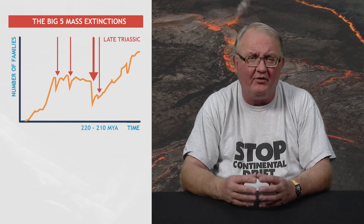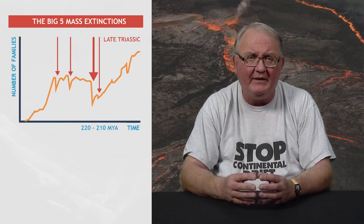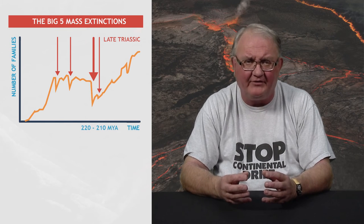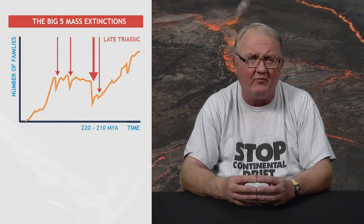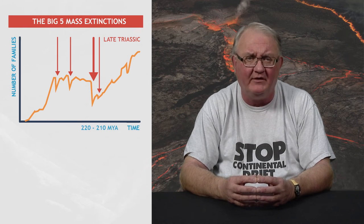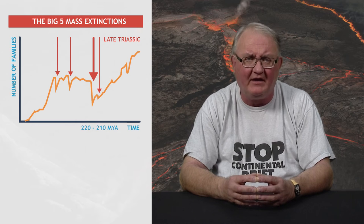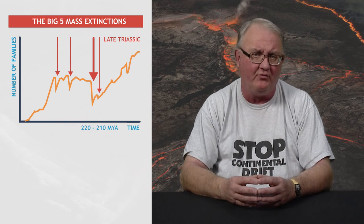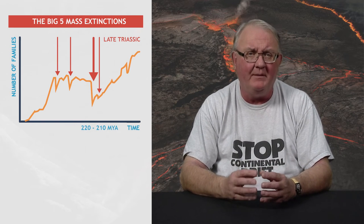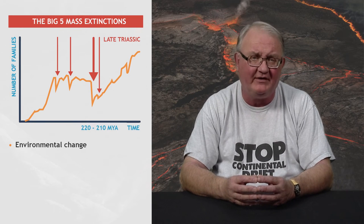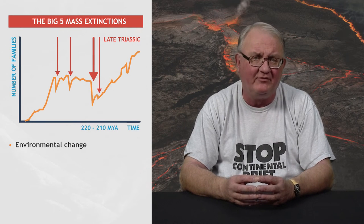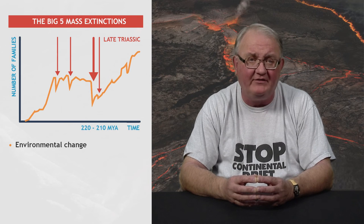The continents, although beginning to separate, were still in close association and red beds are widespread. A wide variety of marine invertebrates may have suffered extinction in the Carnian, more so than the Norian. Many are associated with environmental changes indicated by changes in sedimentary facies. Good data suggests a widespread increase in rainfall in the mid-Carnian. Other features indicate that there was a major marine regression and decrease of habitable shelf area.